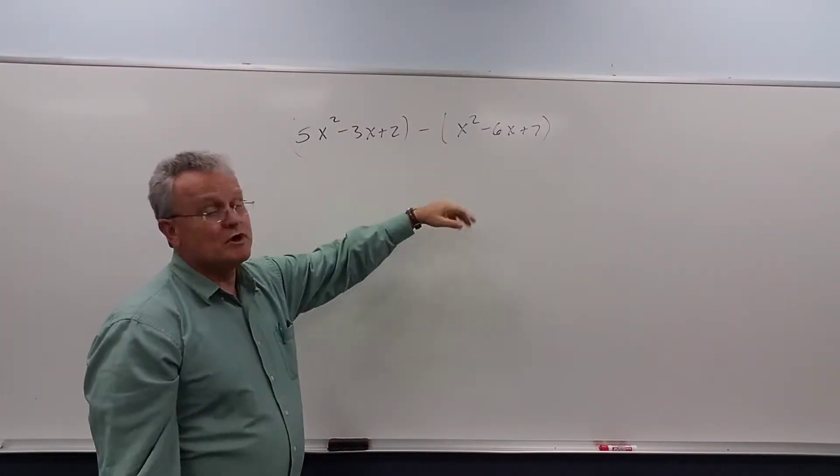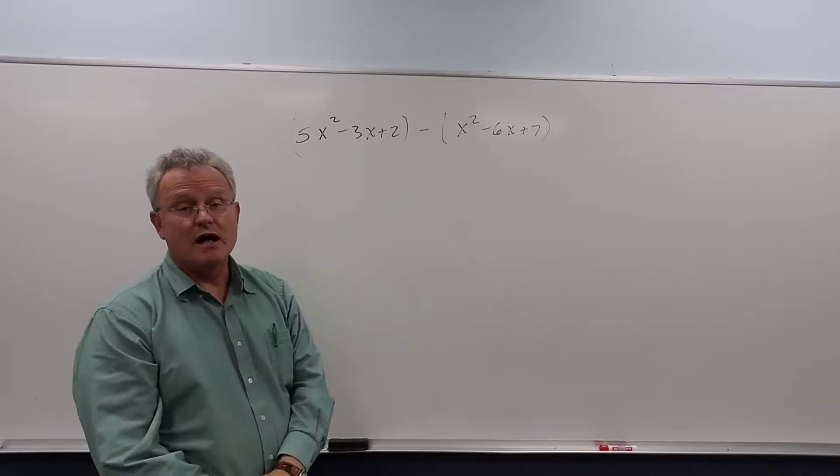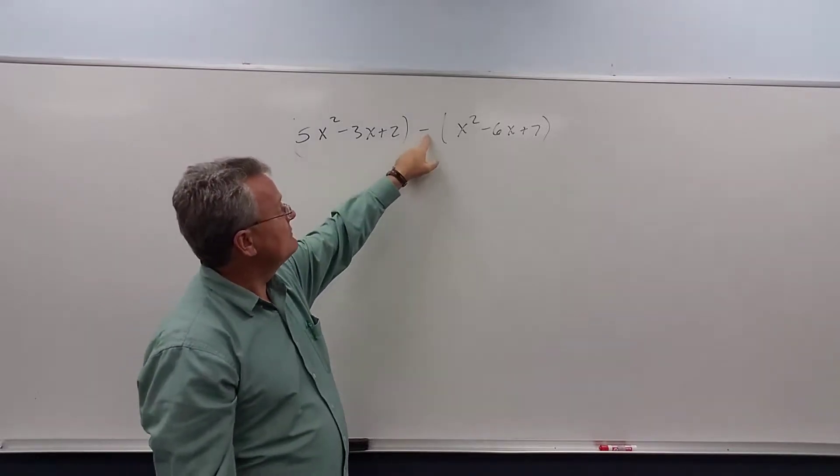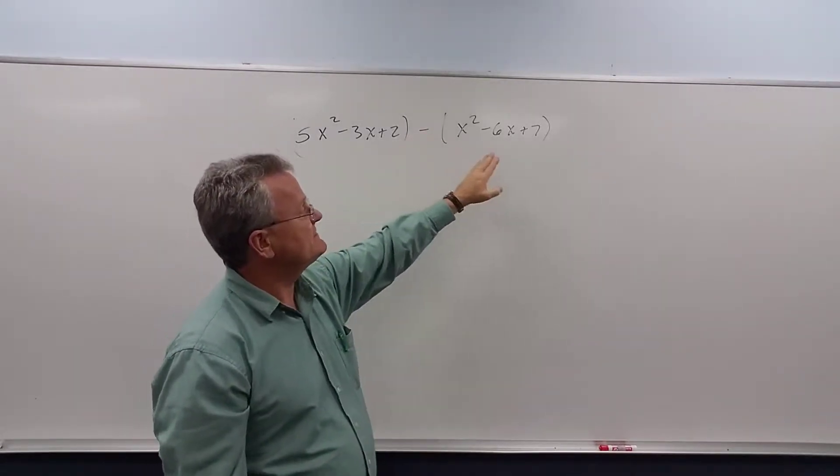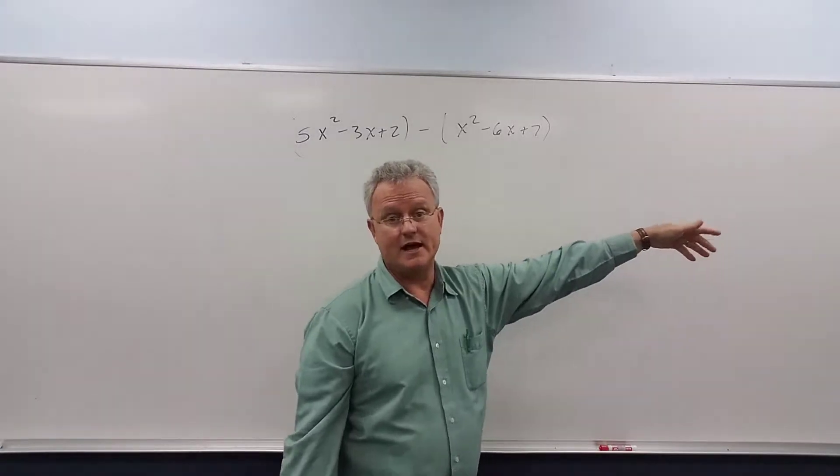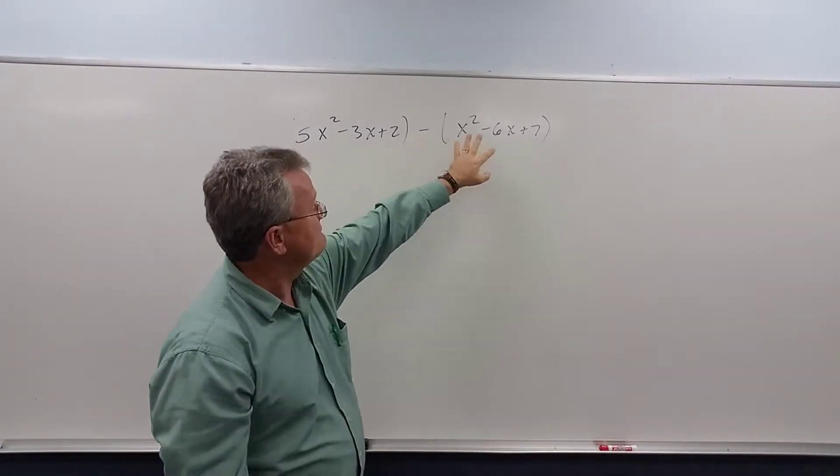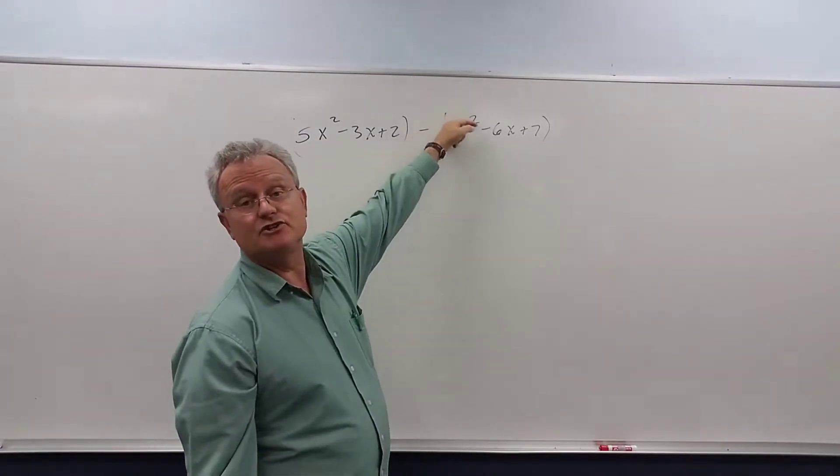In this problem we're going to subtract two polynomials. When you have a negative, and it doesn't matter if there's more added on, if you have a negative in front of the parentheses, you've got to distribute.